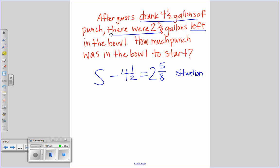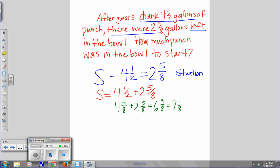Now, how do I get the solution? How do I figure out S? What do I need to do? Do the inverse operation. Do the inverse operation. So, we're going to know what the start was by taking four and a half and adding it to two and five eighths. Well, what is that? Okay. So, there's my solution.